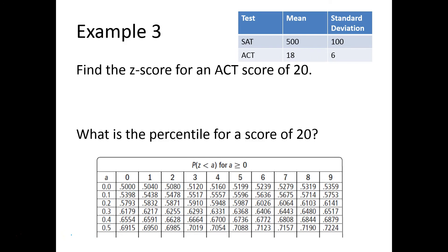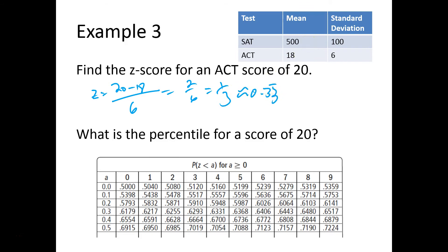This time we have a score of 20. So: 20 minus 18 over 6 looks like 2 sixths or 1 third. Asking what percentile corresponds to that score — 1 third as a z-score is about 0.33 repeating. To find the corresponding percentile, go to 0.3 and scroll over to 3 on the chart. Looks like that percentile is about 62.93%. Finding areas to the left of values is really not that hard.